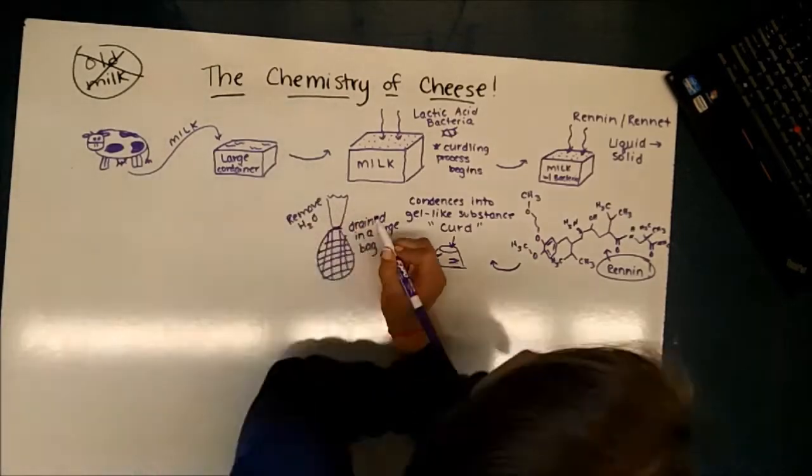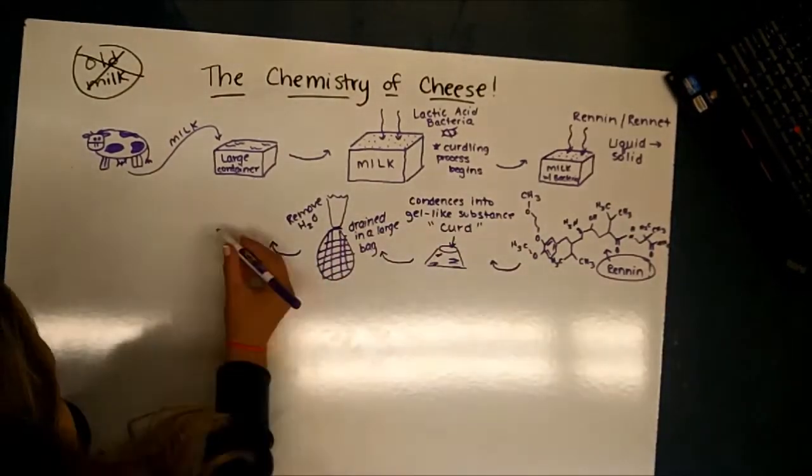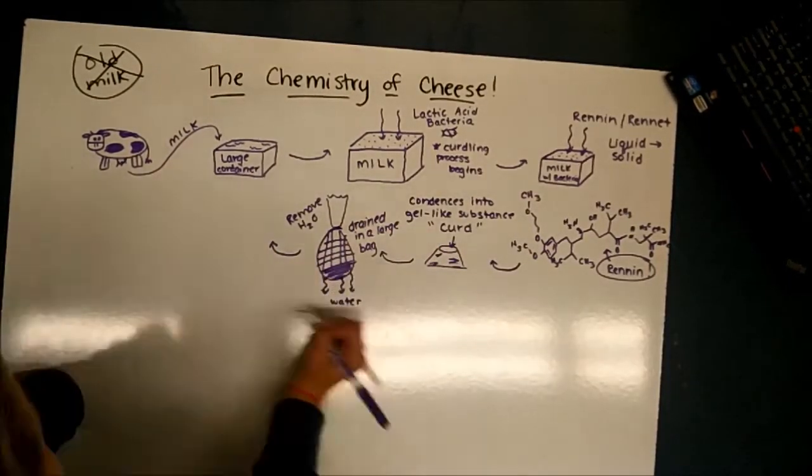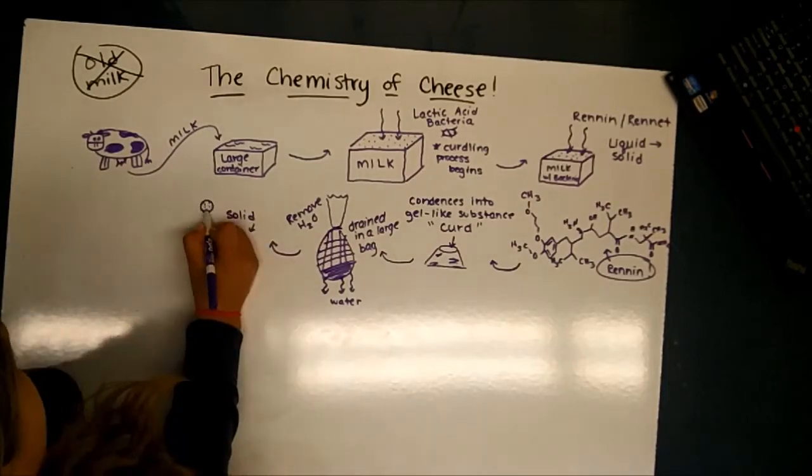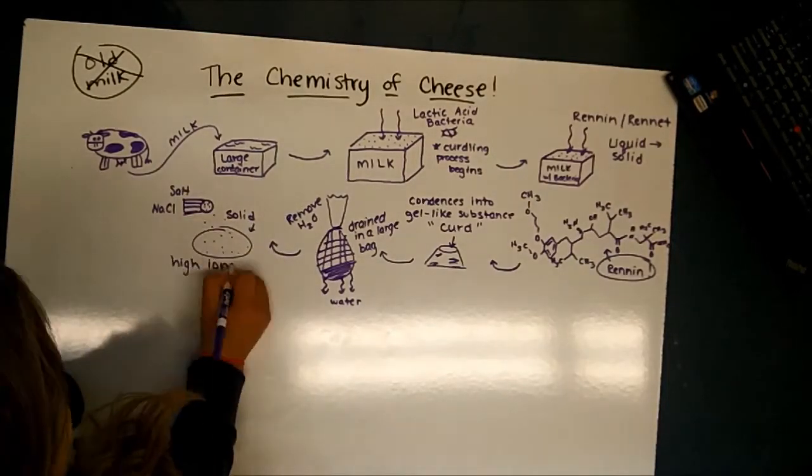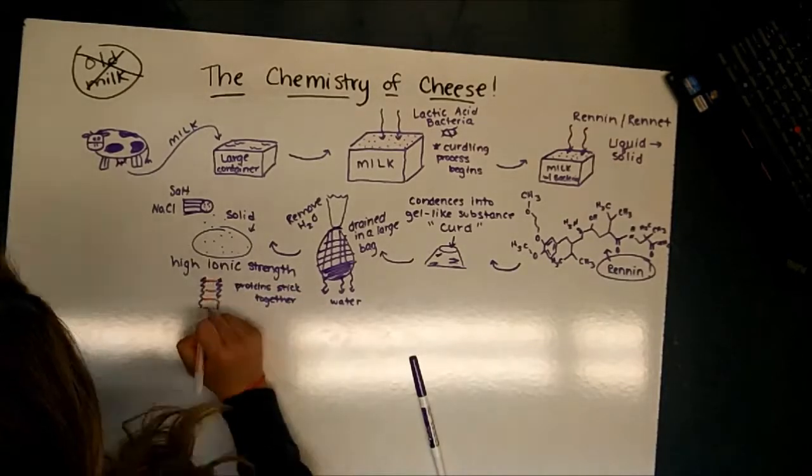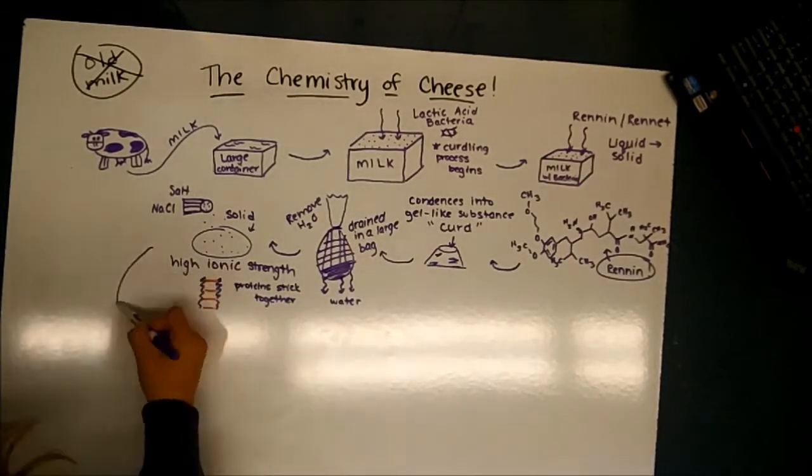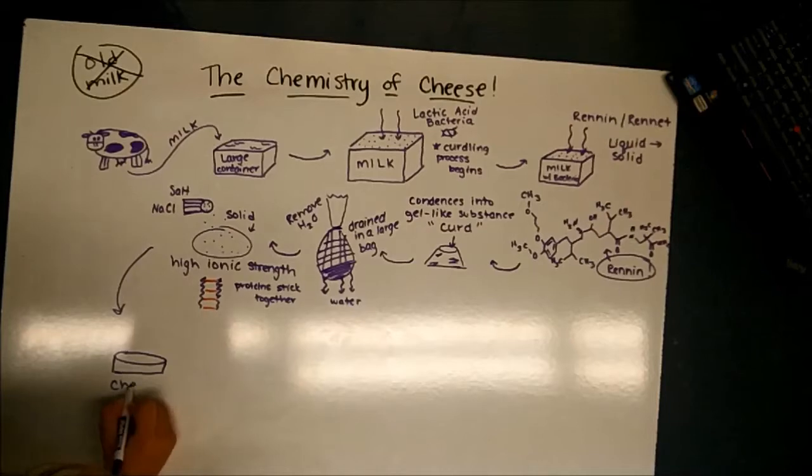Sodium chloride, also known as salt, is then added to create a high ionic strength that helps solidify the substance by allowing the protein strands to stick together. The salt also helps to ensure that the cheese does not spoil as it cures.